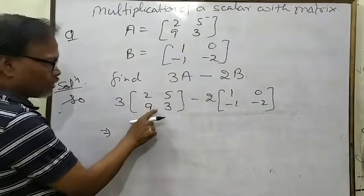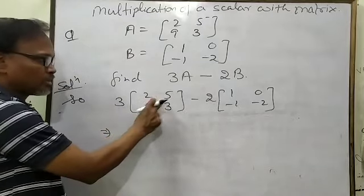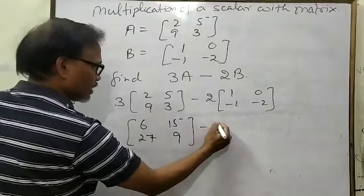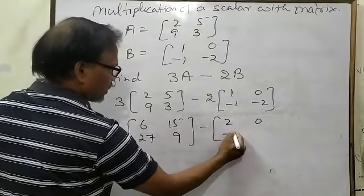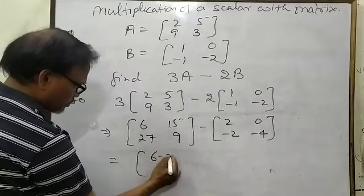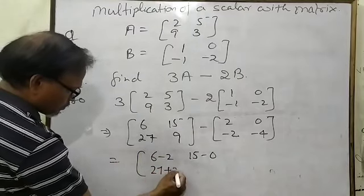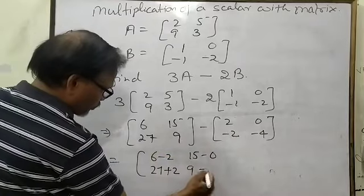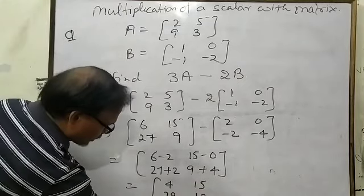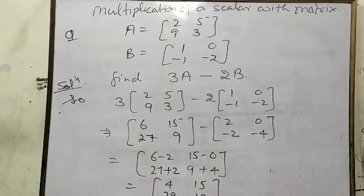Because 3 and 2 are numbers in front of the matrices, you cannot add directly. First multiply 3 into matrix A and 2 into matrix B. So 3A equals [6, 15; 27, 9] and 2B equals [2, 0; −2, −4]. Then subtract: [6−2, 15−0; 27−(−2), 9−(−4)], which gives the answer [4, 15; 29, 13].